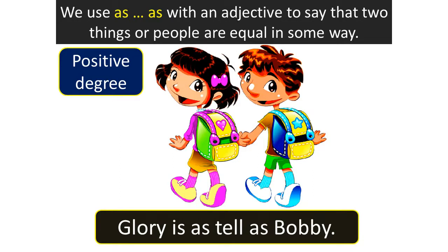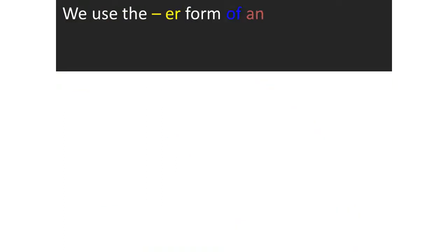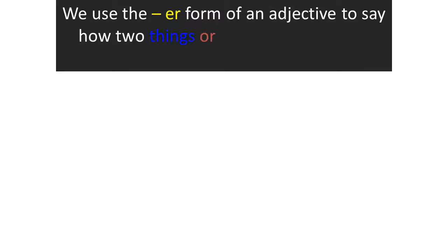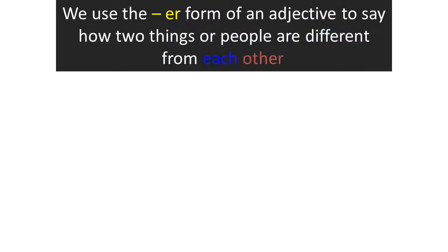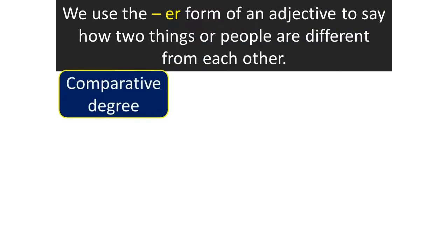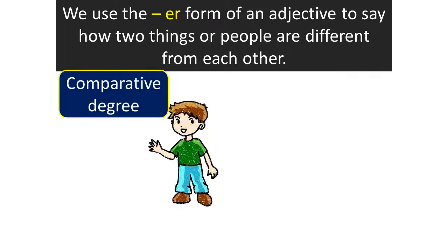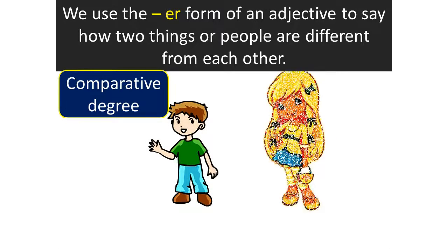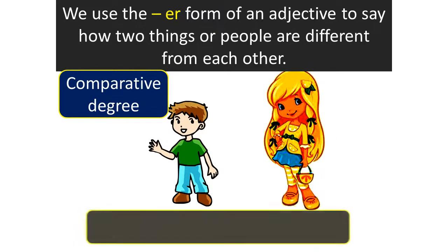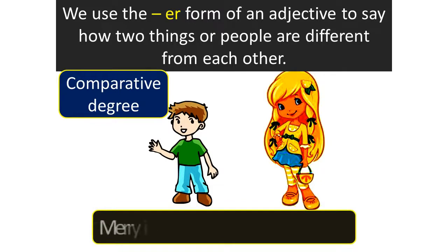We use the '-er' form of an adjective to say how two things or people are different from each other. This is the comparative degree. For example: Mari is taller than Mac.